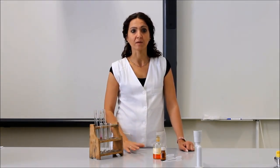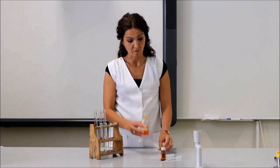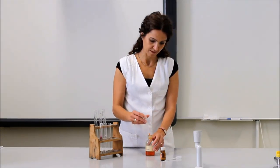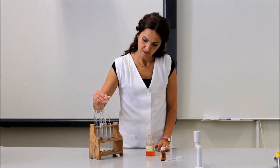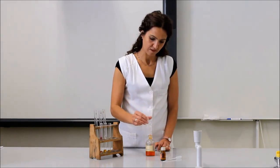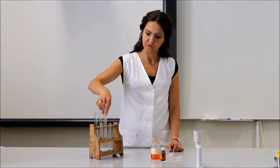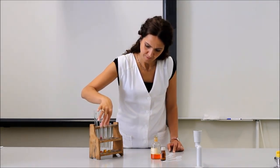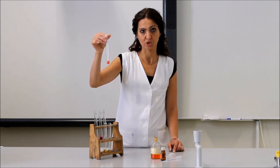Erre lesz szükségünk a második indikátorra, a metil-narancsra, amelynek átcsapási tartománya a savas pH-tartományban van. Ez azt jelenti, hogy a savas és a semleges kémhatást egymástól meg tudjuk különböztetni. Az első kémcsőben a metil-narancs piros színt mutat, ebben van a savas kémhatású oldat. A második kémcsőben a metil-narancs sárga szín, amely jelzi a semleges kémhatást.